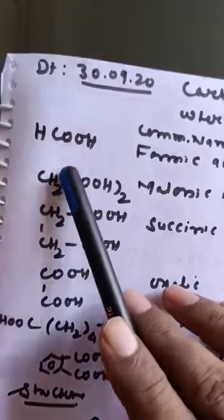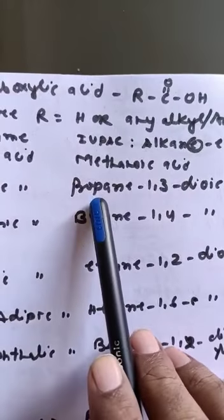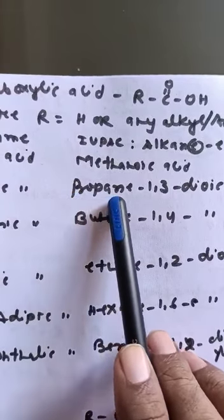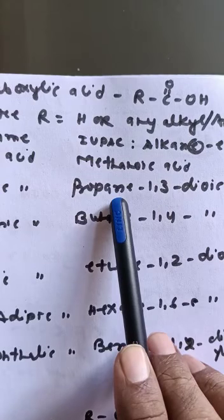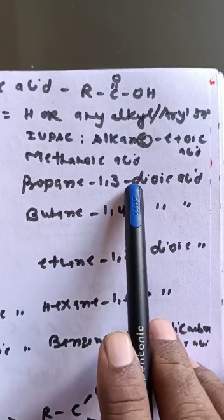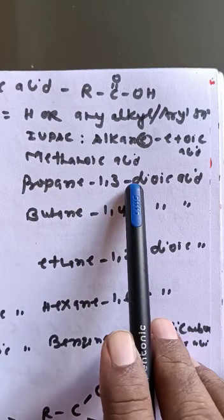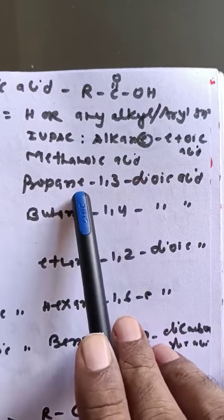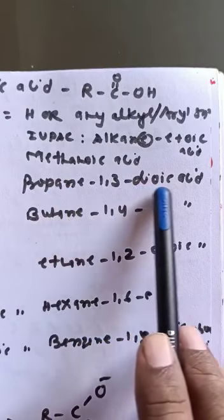Similarly, for this compound, 1, 2, 3, it means 3 carbon atom. For 3 carbon atom, propane. For 2 carboxylic group, we use di. So, this is not vowel. So, here, we use vowel. Propane-1,3-dioic acid.